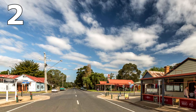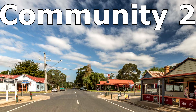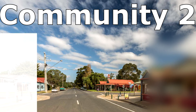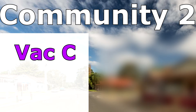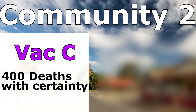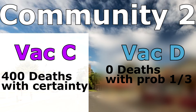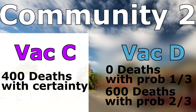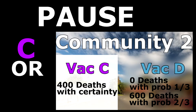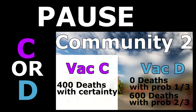For the second community, you face a decision between vaccines that will lead to the following outcomes. VAC C will lead to 400 people dying, and VAC D will lead to no one dying with a probability of one third, and everyone dying with a probability of two thirds. Which vaccine would you choose?